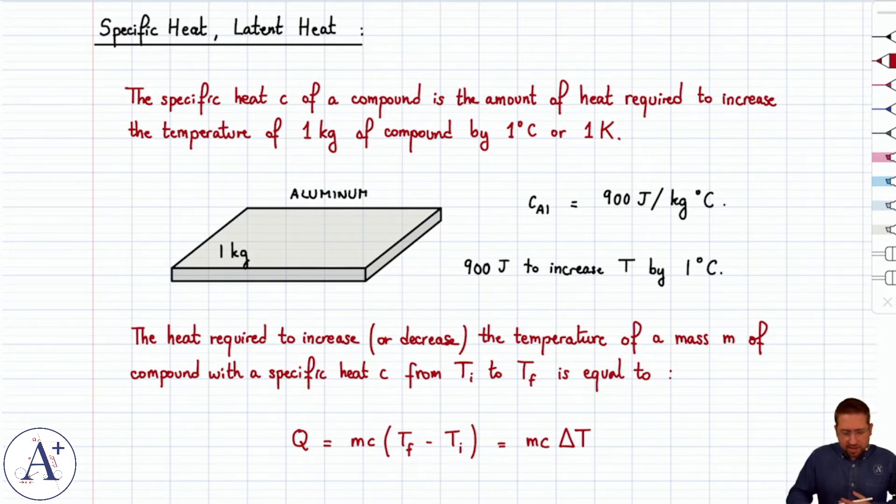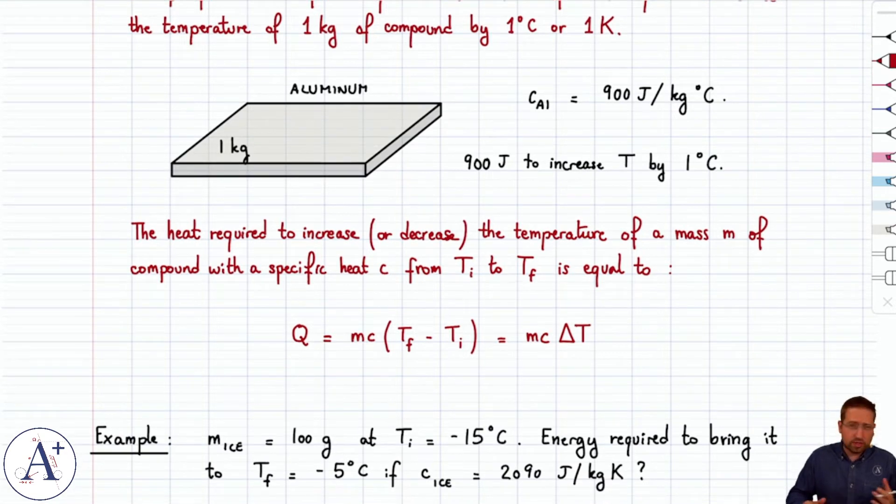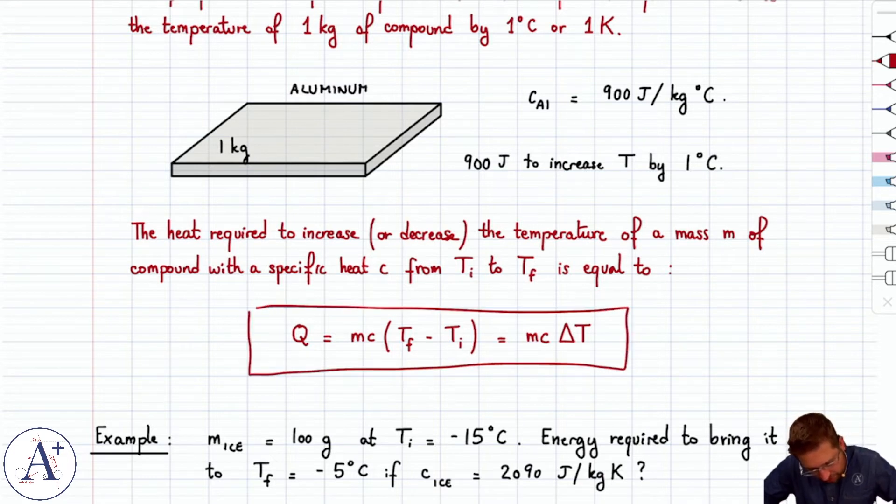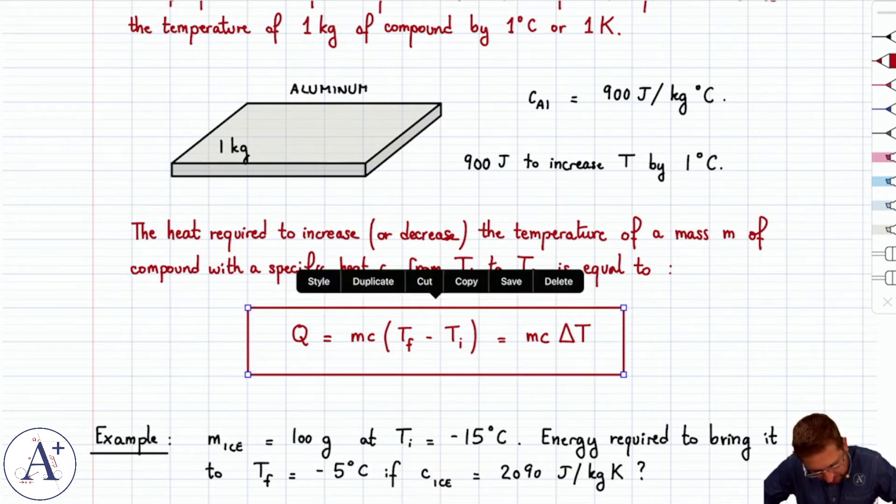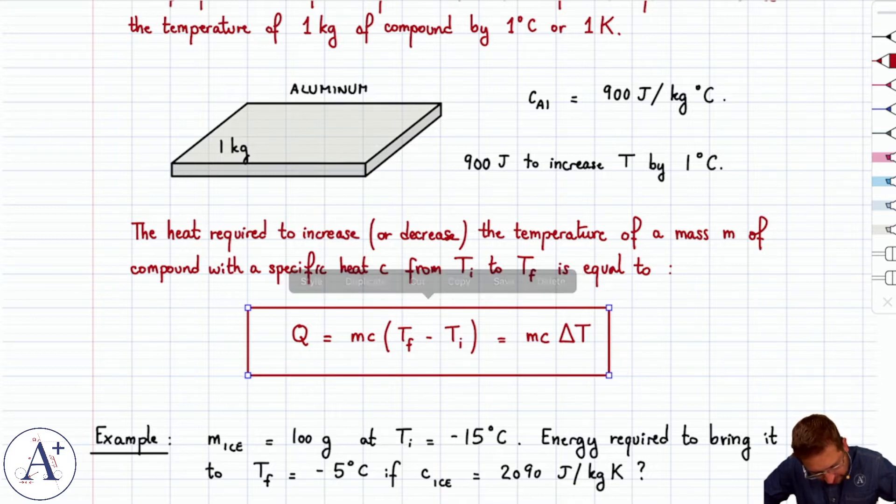But because of what we just said, it makes sense that the heat required to increase or decrease the temperature of a mass m of compound is given by Q is m times C, the specific heat, times delta T, the change in temperature, right?